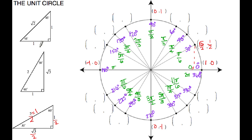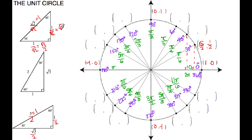For the 45 degrees, I'm doing the same thing — taking my 45-45-90 triangle and putting it right in here. We need the hypotenuse (the radius) to be 1 unit, because it's a unit circle. So I'm going to divide everything by root 2. We can't have radicals in the denominator, so that's equivalent to root 2 over 2. So my horizontal distance is root 2 over 2, and the vertical distance is also root 2 over 2.